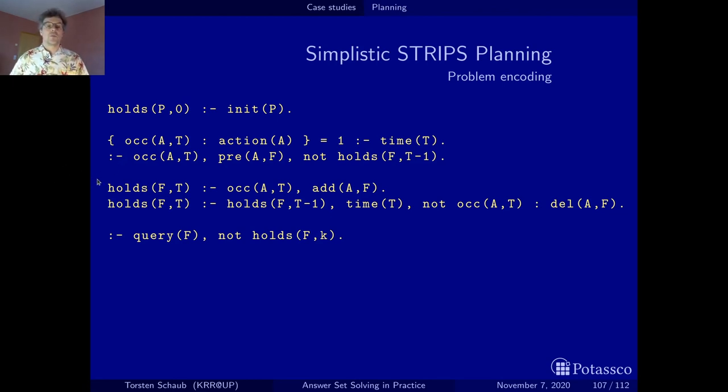Now, here we more or less describe how information is transported from one state to another. The first one enforces the positive effects of an action. So, it says, if an action occurs, its add list, so the fluent that is its positive effect, the fluent that it makes true, must hold at the next time step, which is in this case the same, remember our indexing scheme. So, this is an axiom, well, this is a rule that enforces the effect of axioms, the positive effect of axioms.